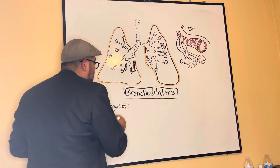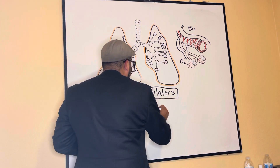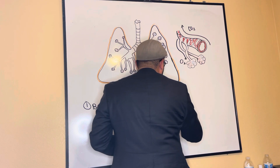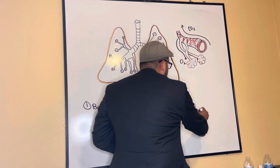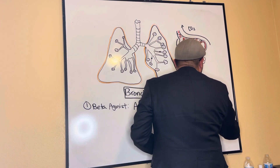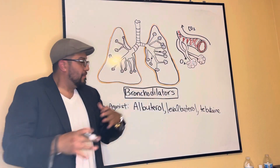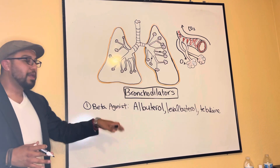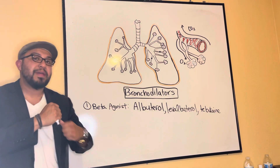Some of these drugs you probably know as albuterol, levalbuterol, and terbutaline. These are the most common medications you're going to hear when it comes to beta adrenergic agonists. These medications enhance sympathomimetic activity.